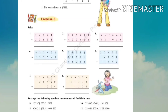Arrange the following numbers in columns and find their sum - इन type की questions को आप अपने homework copy में solve करोगे। हम ones, tens, hundred, thousand और ten thousand के column में numbers को arrange कर लेंगे, उसके बाद ones के place से addition start करेंगे।